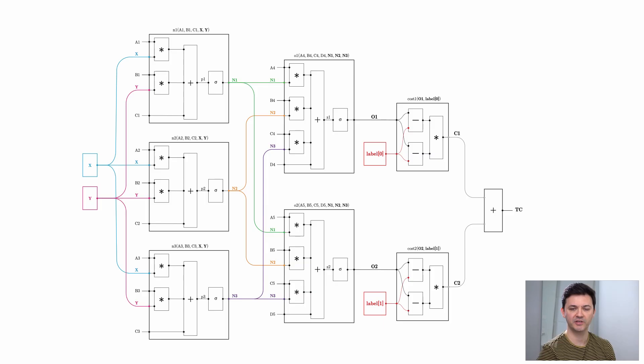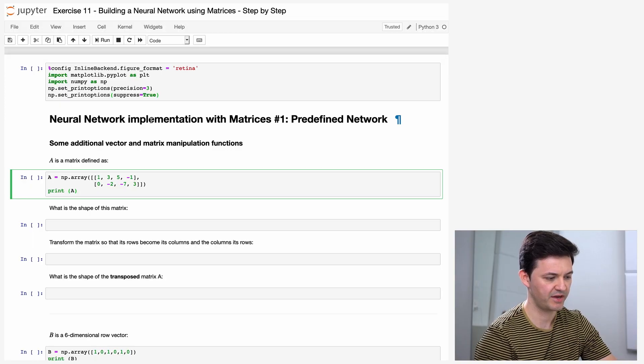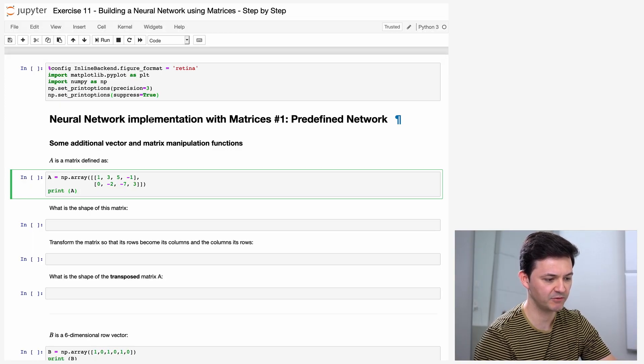This is the neural network that we implemented without using any linear algebra at all, and the task for today is to implement this neural network by using linear algebra — by using vectors, matrices, and operations on vectors and matrices. Before we start, let's warm up with exercise number 11, which is about building a neural network using matrices step by step.